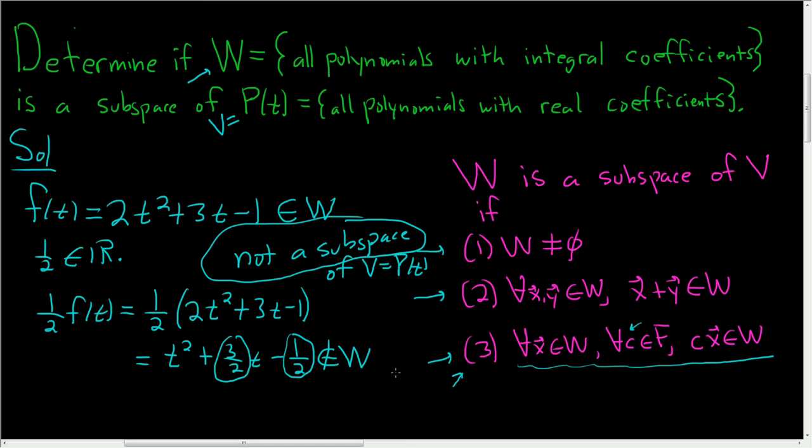When determining if something is a subspace, you think about it and go through these three conditions. I knew immediately to use this one because when I saw that all coefficients had to be integers, I thought, what if you take a fraction and multiply it by your polynomial? That could ruin this, and you'll end up with something that is not in W.